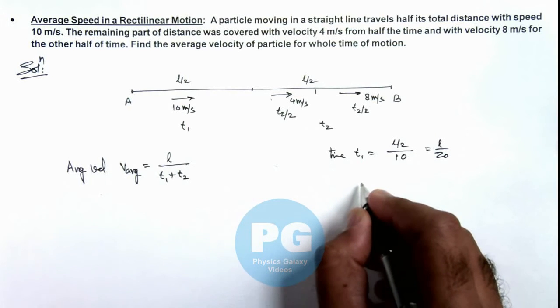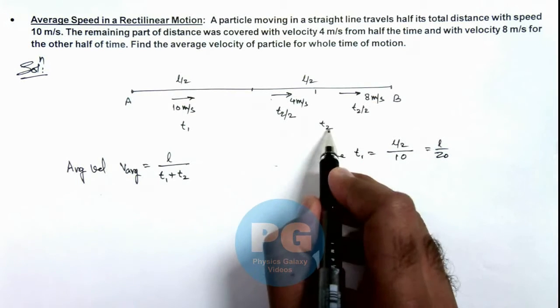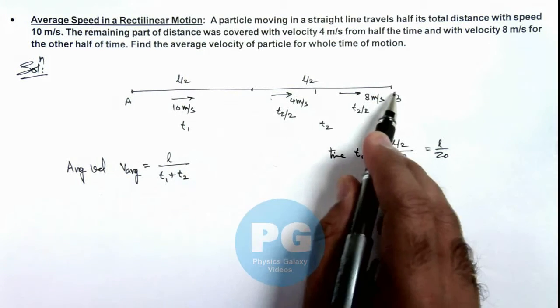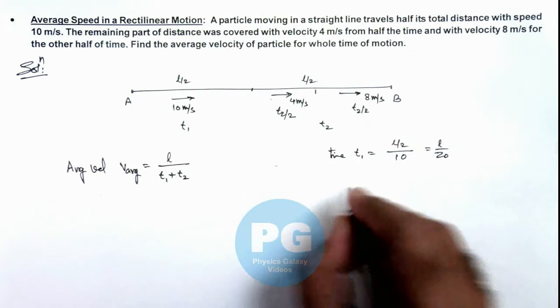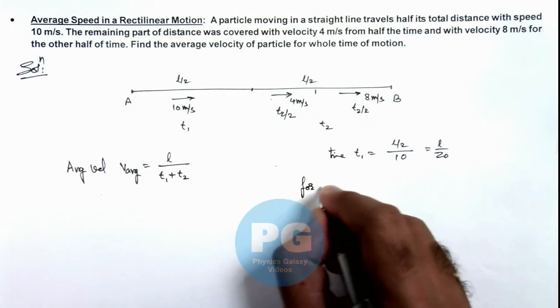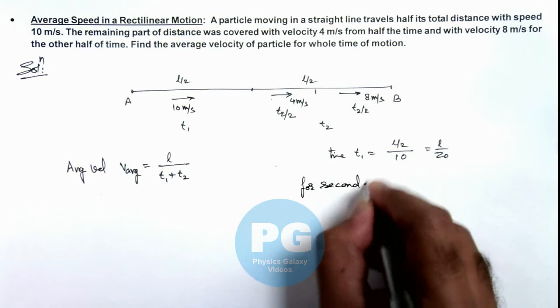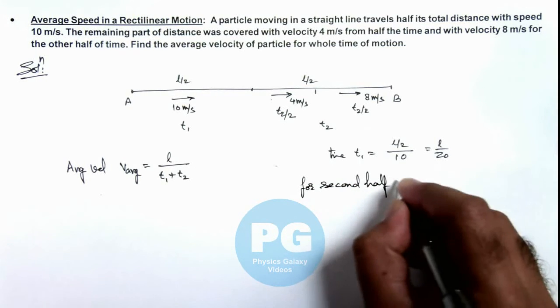If we calculate the time t2, this can be obtained in two parts. The total distance L by 2 is covered in two parts, so we can write for the second half of journey.